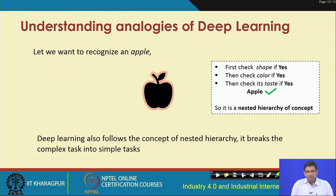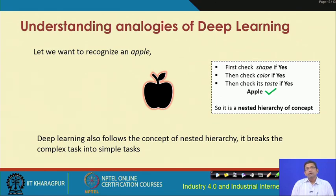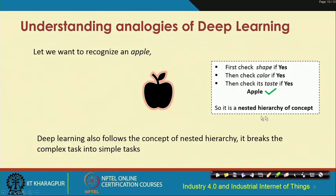Let us take an analogy from real life about how deep learning works. Say we have to recognize whether something is an apple or not. First you check the shape — if the shape is as expected, then you check the color — if color is okay, then you check its taste by taking a bite. If the taste is okay, you confirm it is an apple. This recognition is based on shape, color, and taste — that is the nested hierarchy concept, which deep learning also follows.